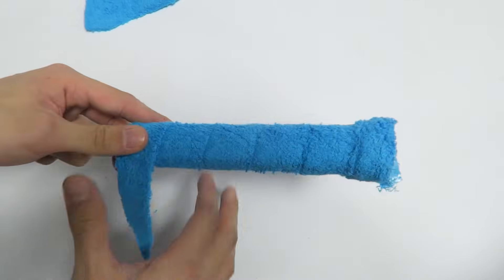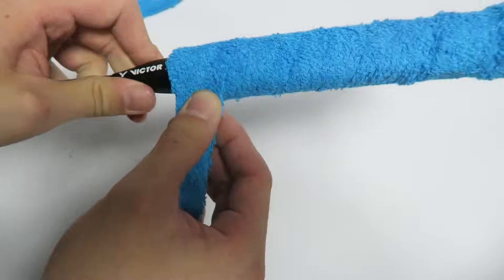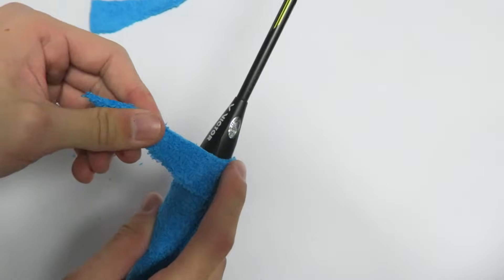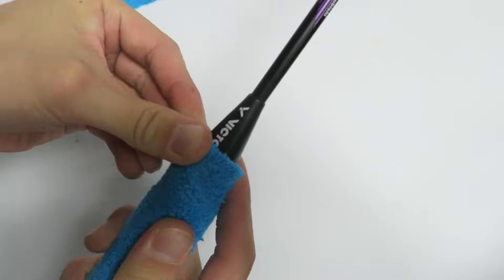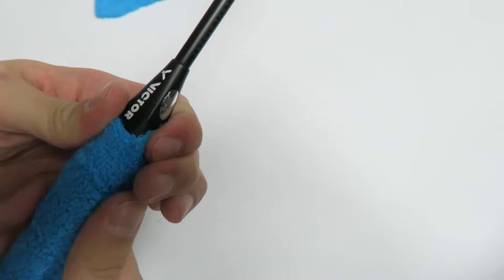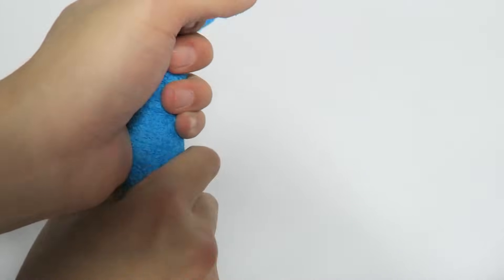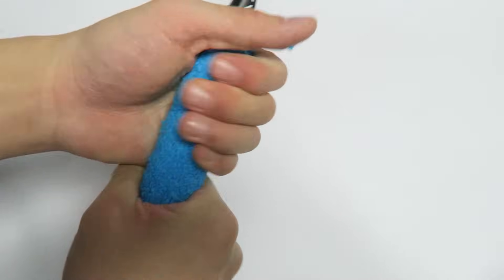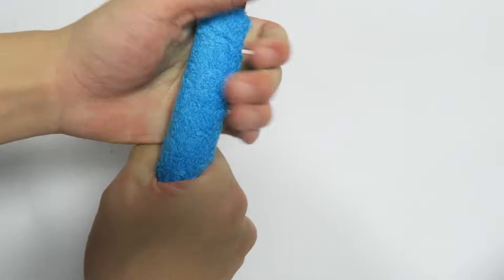And then continue wrapping. Once you reach the end it should give a good squeeze and twist on the grip itself to make sure it stays on properly.